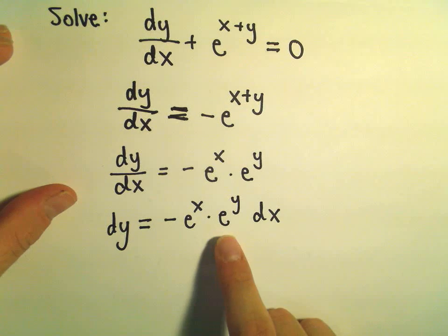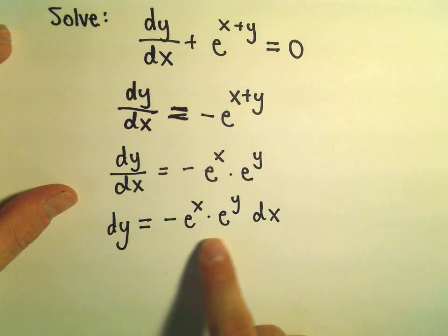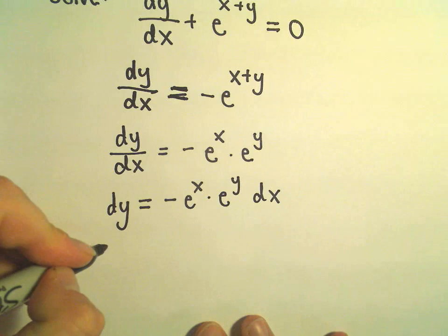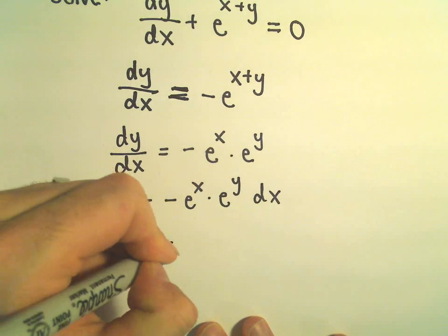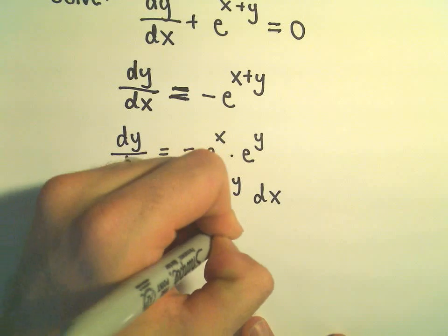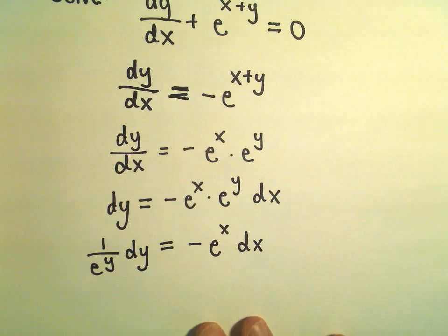And now I want to get the y's over to the left side. So I can simply divide both sides by e to the y, and I'm going to write that as one over e to the y dy. We've got negative e to the x dx.